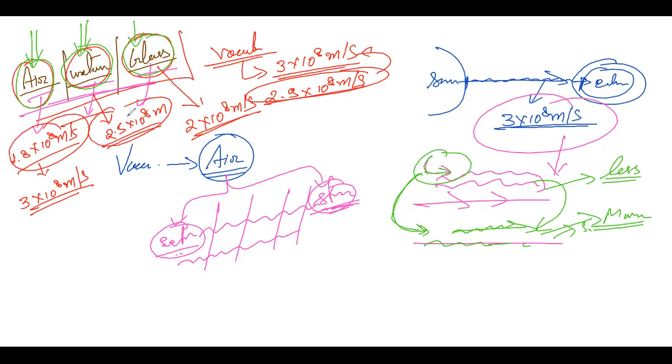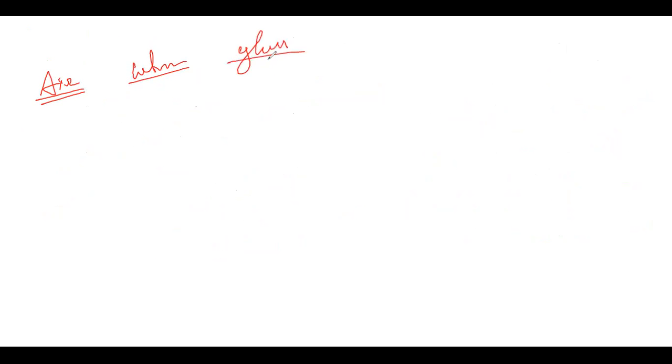For glass, the speed is approximately 2 × 10⁸ meter per second. You can see that the speed is getting decreased as we go through different media. This is because different media have different amounts of optical density, and because of this different optical density, the speed is also different. All three — air, water, and glass — are transparent, but they do not allow light to travel in the same manner because they all have different optical densities.